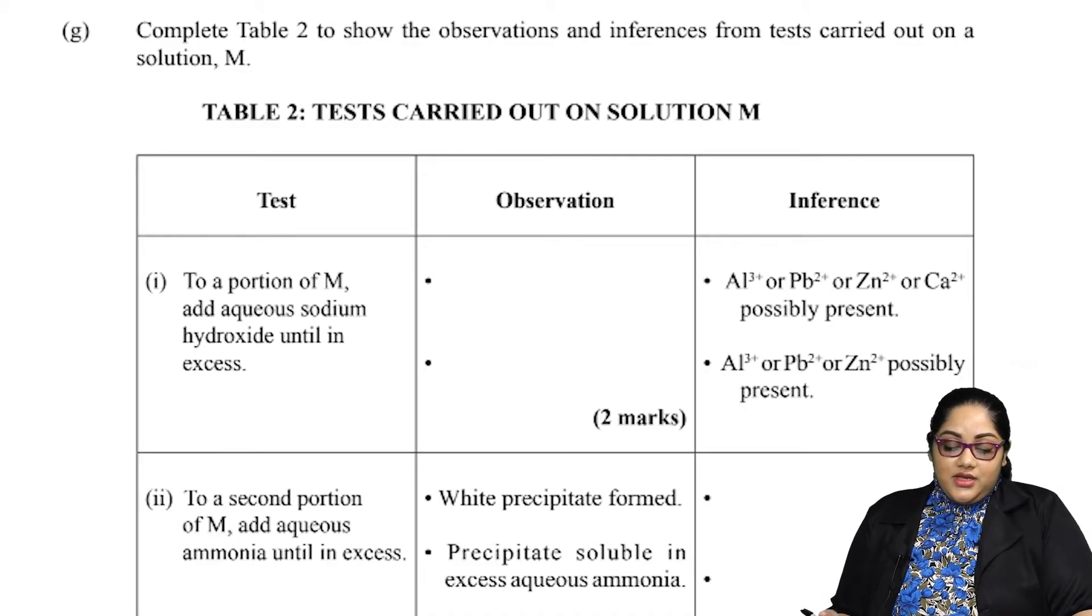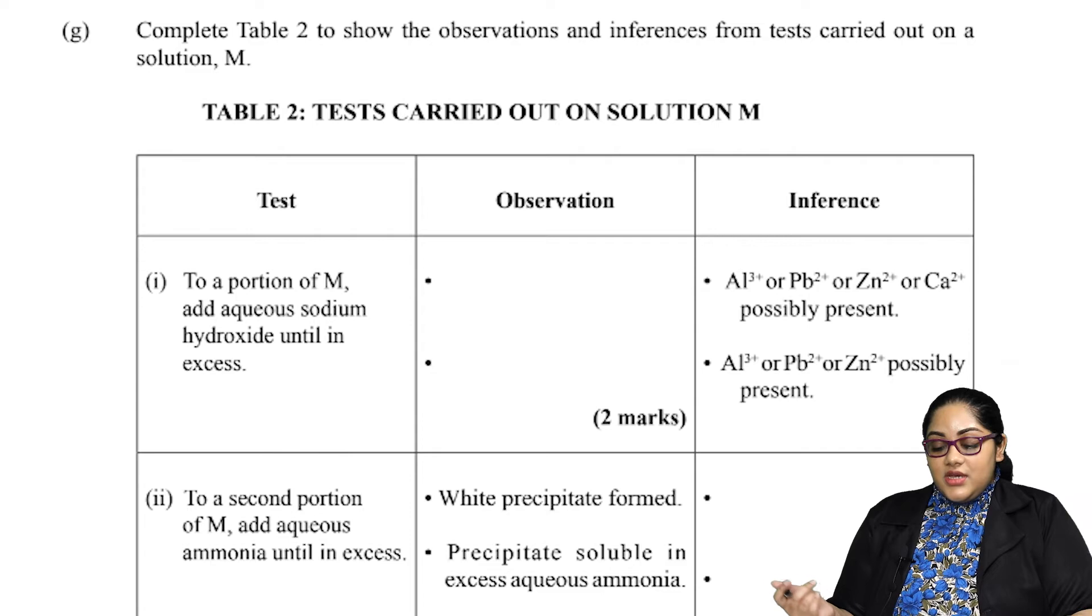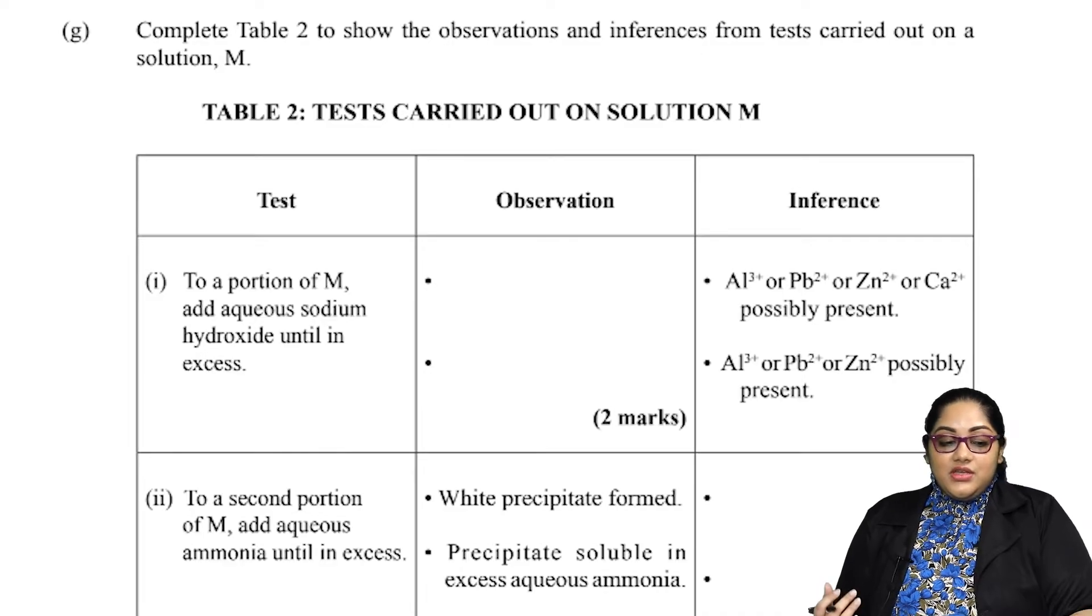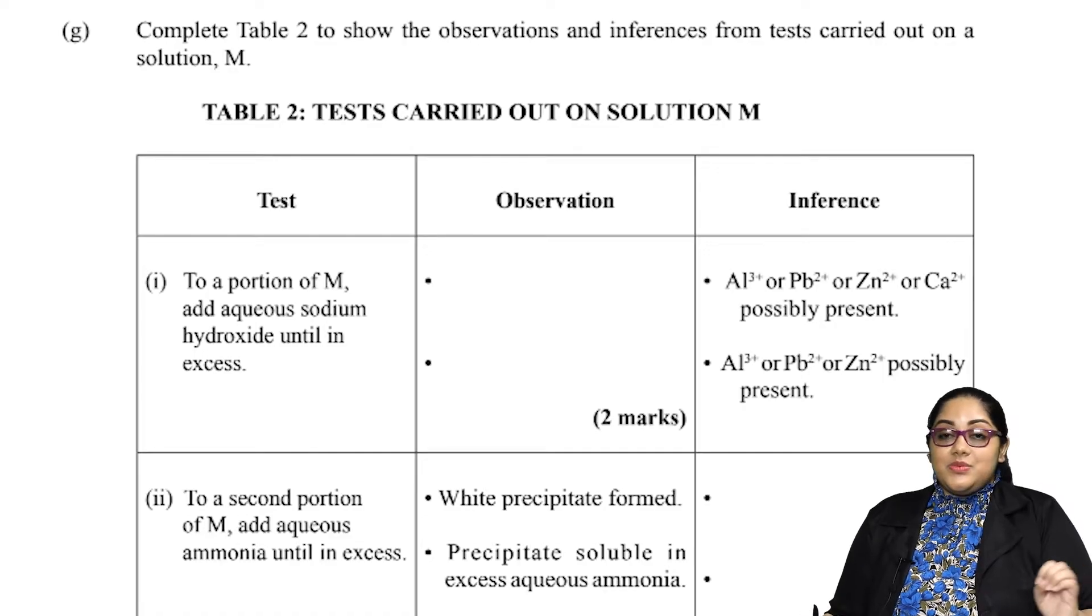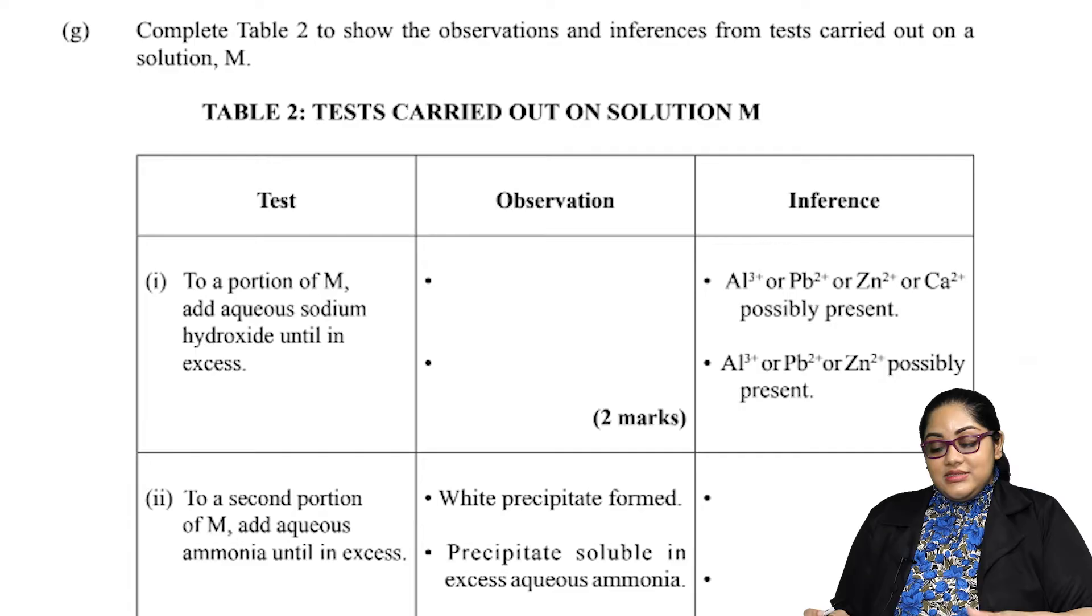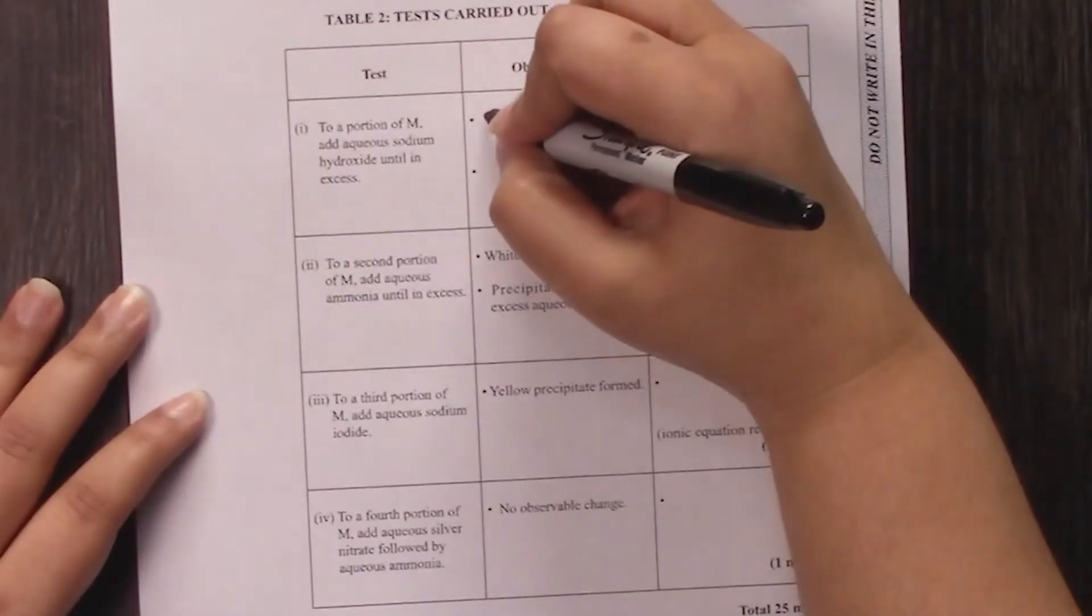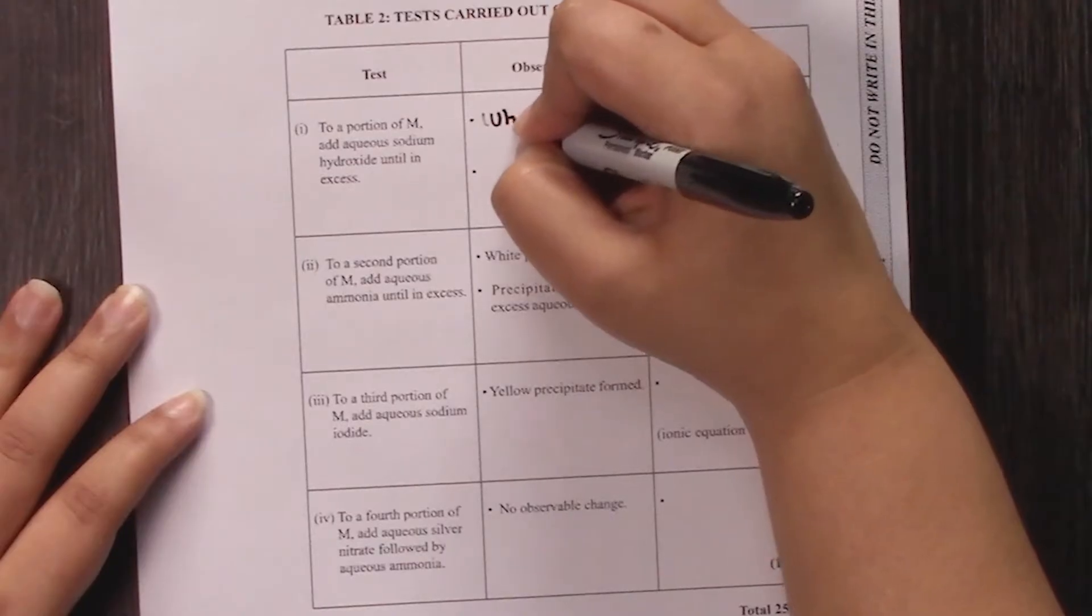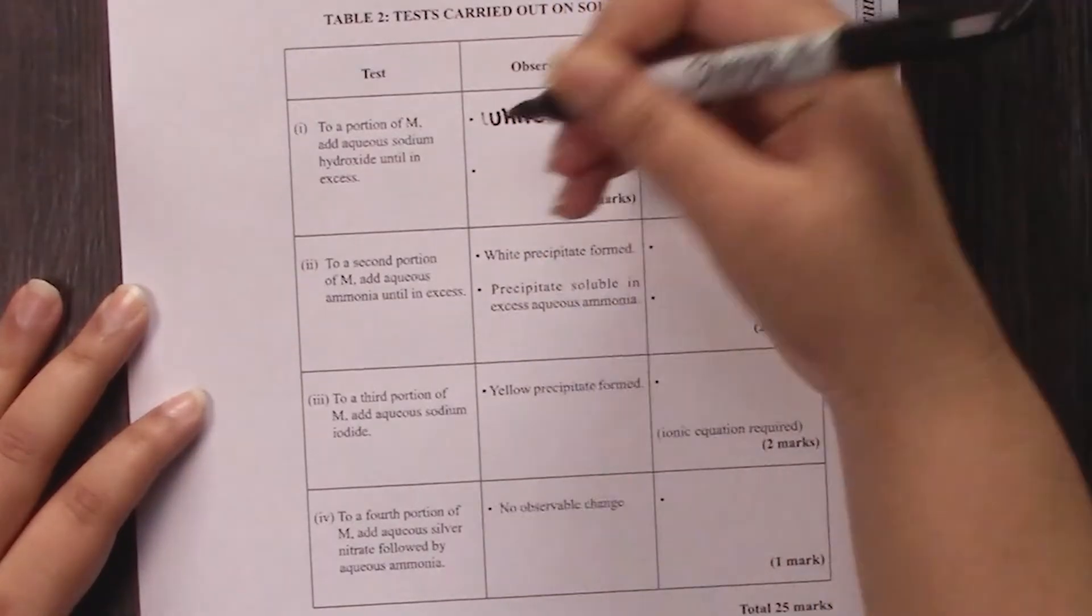In part 1, to a portion of M, we are adding aqueous sodium hydroxide until in excess. Our inferences are that we have the Al3+, Pb2+, Zn2+, and Ca2+ ions present. What that means is that we are going to observe a white precipitate. Once you are given these four ions as an inference, it is automatically a white precipitate when we add sodium hydroxide drop-wise.